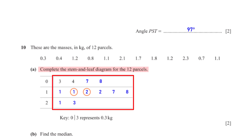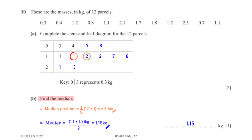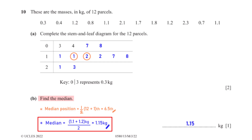Find the median. To get the position of the median we use the formula ½(n + 1) where n is 12, giving us 6.5. This means the median is between the sixth and seventh numbers. The sixth value is 1.1 kg and the seventh is 1.2 kg, so the median is (1.1 + 1.2) ÷ 2, which equals 1.15 kilograms.